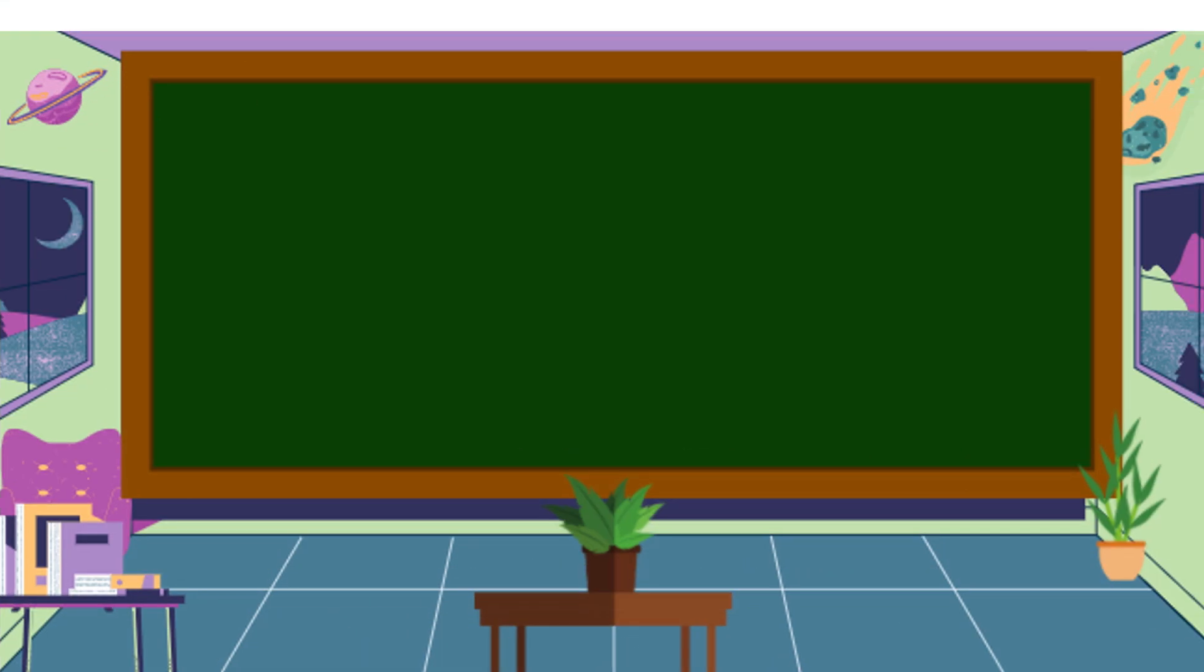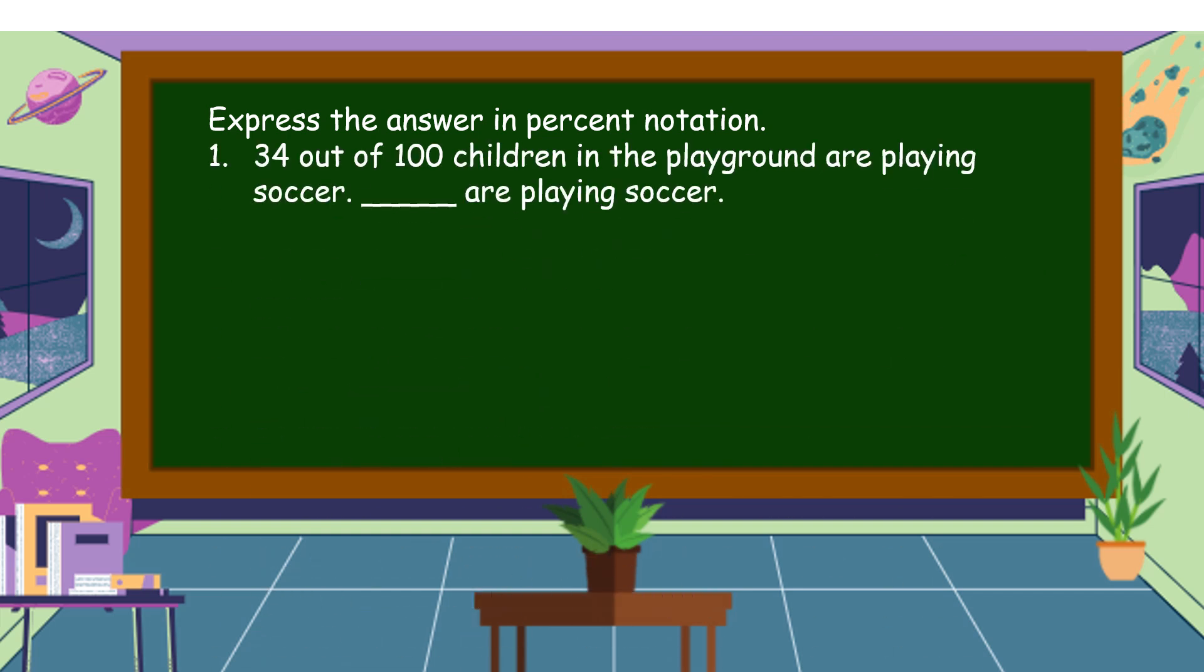To understand fully our lesson, let's study the following examples. Express the answer in percent notation. Number one: 34 out of 100 children in the playground are playing soccer. So we're going to express 34 out of 100 into a percent notation. You get the correct answer: 34 percent.